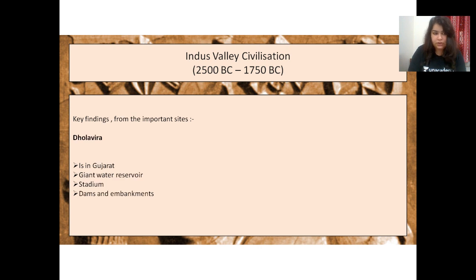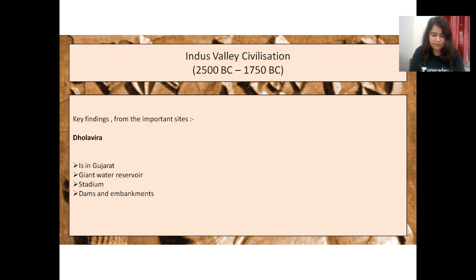Dholavira is located in Gujarat. Two interesting things were found here: a giant water reservoir and multiple stadiums. There were also dams and embankments, indicating these people were cautious about rising water levels and flood protection. These were not large intricate dams but small-scale dams and embankments serving as protective infrastructure.